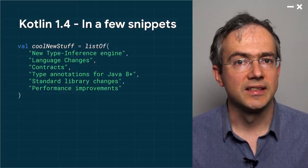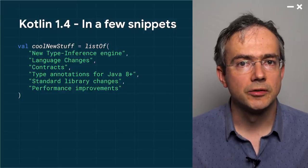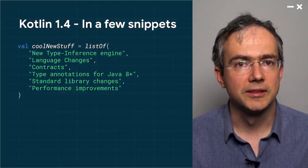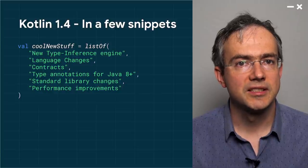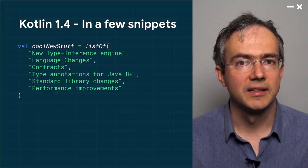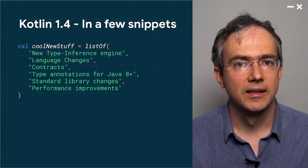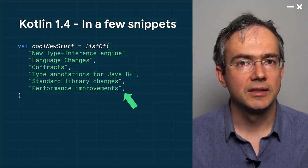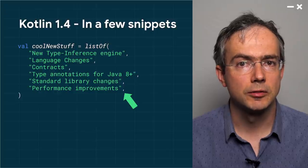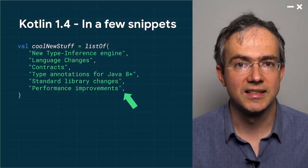The next feature I want to showcase is a small but powerful language addition. Up until Kotlin 1.3, parameter lists were not allowed to have a trailing comma for the last element. 1.4 removes this restriction. By allowing the trailing comma, the code looks more symmetrical and will cause fewer distractions in code review, as adding new entries will no longer highlight multiple changed lines.